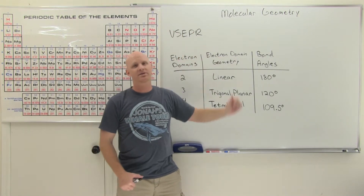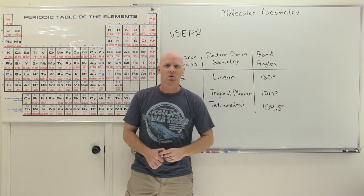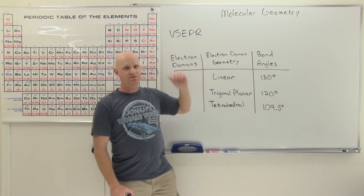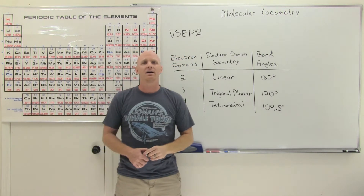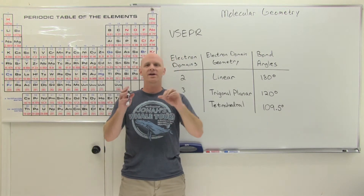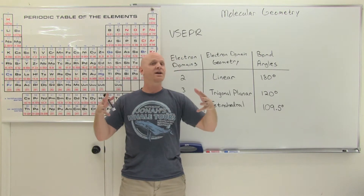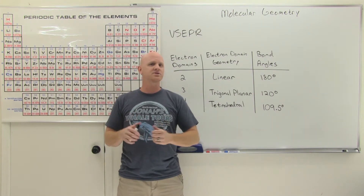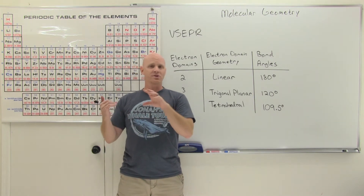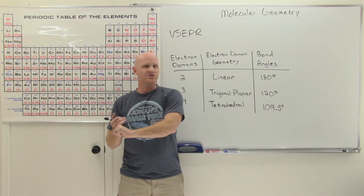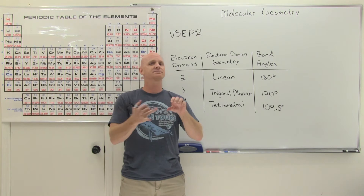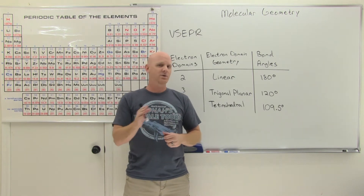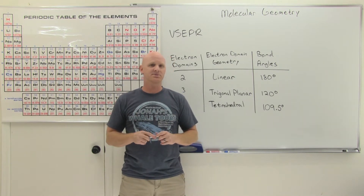Molecular geometry is the topic of this lesson. We'll start off with VSEPR theory and talk about how the electron groups around an atom try to spread out as far apart as possible to minimize repulsions. We'll talk about both electron domain geometries as well as molecular geometries, and how you distinguish between the two.